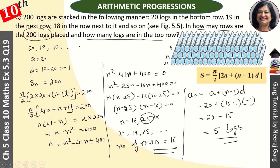So this is 20 minus 15, which equals 5. So the top row will have 5 logs. This is our second answer. Hope you understood the question well. If you are new to my channel, subscribe, like the video, share with your friends. All the best.